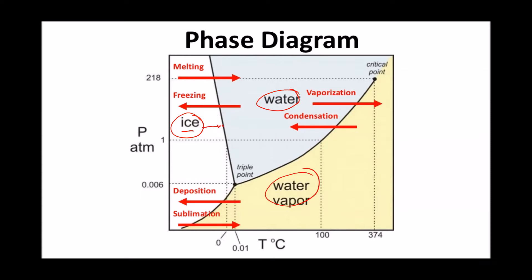As you heat the ice, it reaches the equilibrium line between solid ice and liquid water. Any point along this line corresponds to melting or freezing depending on the direction of change. If you heat a sample up it will melt, and after all the sample melts, liquid water will use any additional heat to increase temperature until it reaches 100°C, where it boils into the gas phase. Further heating makes the vapor heat up.